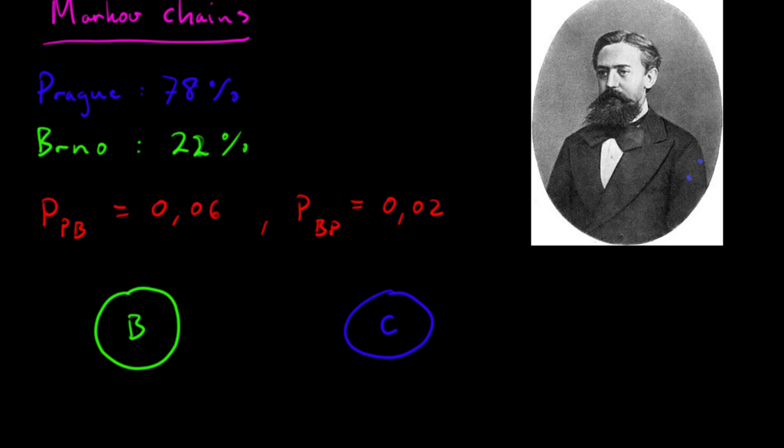So how can we go about showing how this movement pattern is going to take place? Well, there was a 2% chance of moving from Brno to the capital, and a 6% chance of moving the other way.